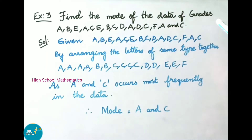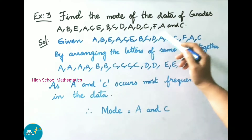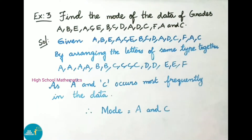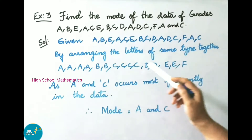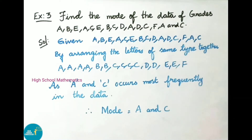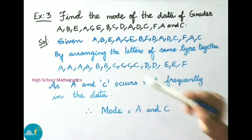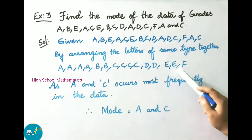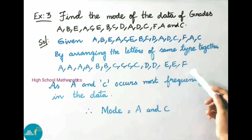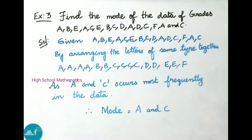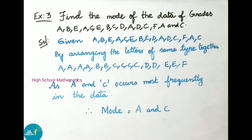Example 3: Find the mode of the letter data: ABE, ACE, BCD, ADC, FA, and C. Arranging letters of the same type together: A appears 4 times, B appears 2 times, C appears 4 times, D appears 2 times, E appears 2 times, and F appears 1 time. Since A and C both occur most frequently at 4 times each, mode equals A and C. This is bimodal data.